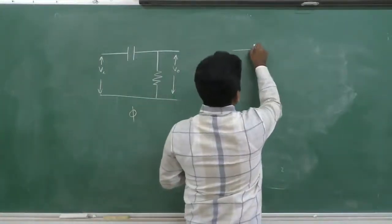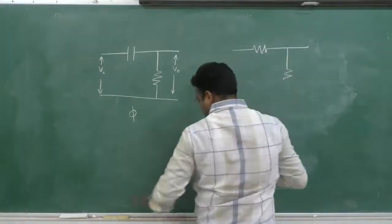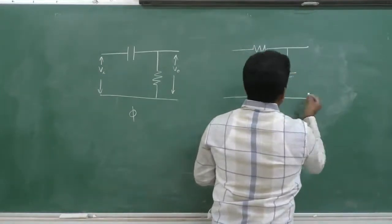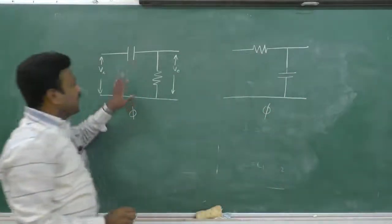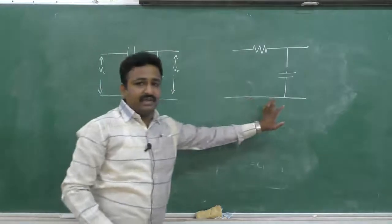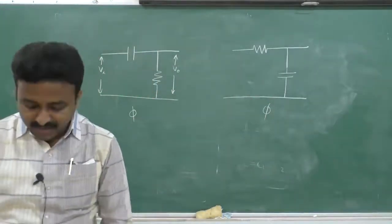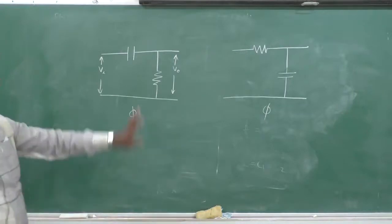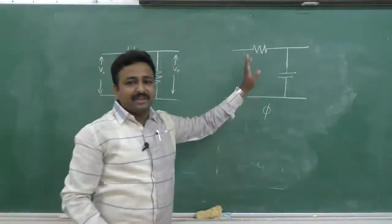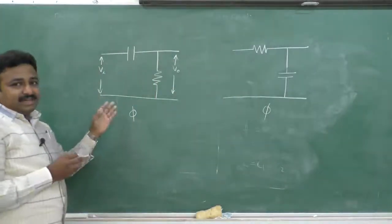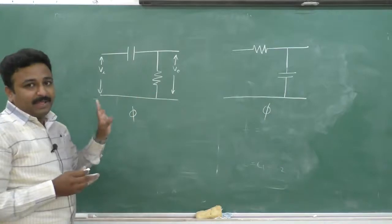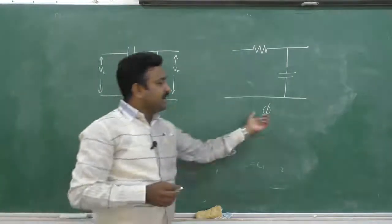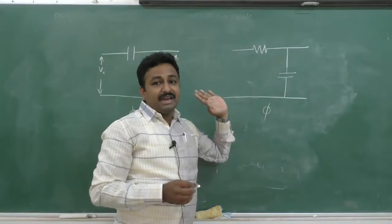Similarly, in the RC low-pass filter, the output is lagged behind the input by an angle phi. So the RC high-pass filter is also known as a lead network, and the RC low-pass filter is known as a lag network. In the lead network, the phase angle is negative, and in the lag network, the phase angle is positive.